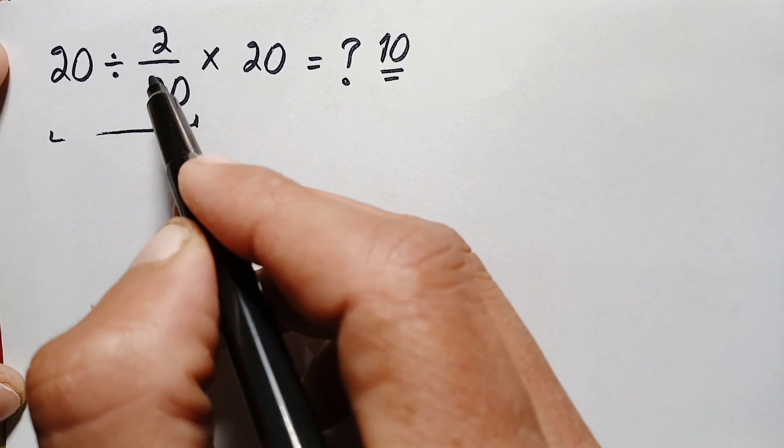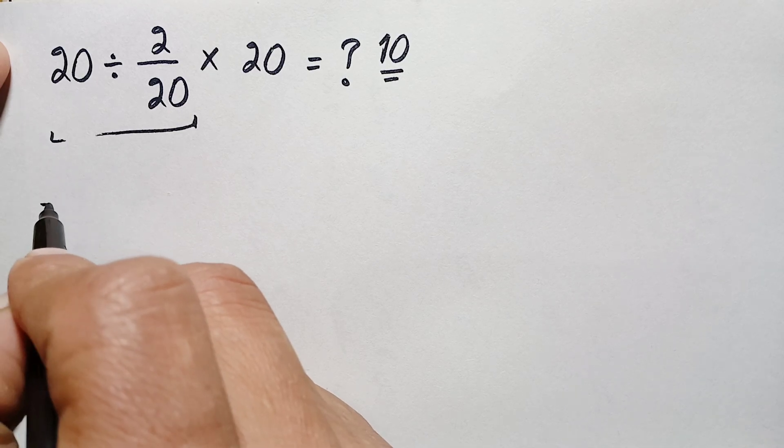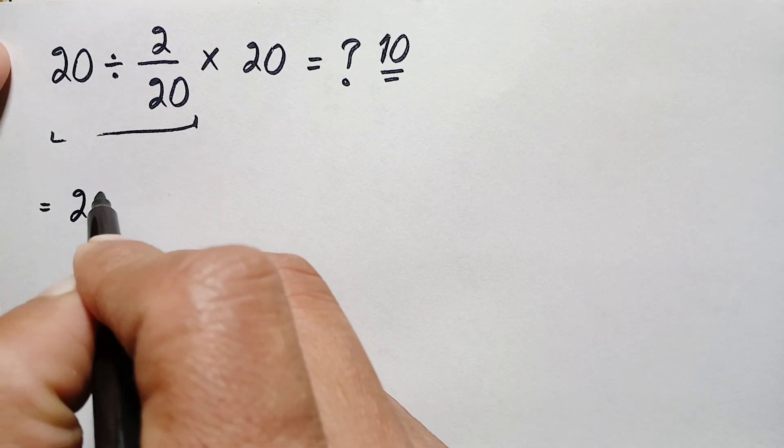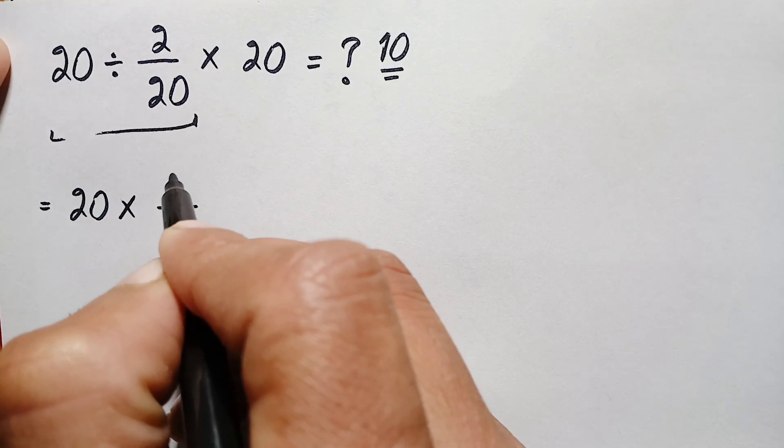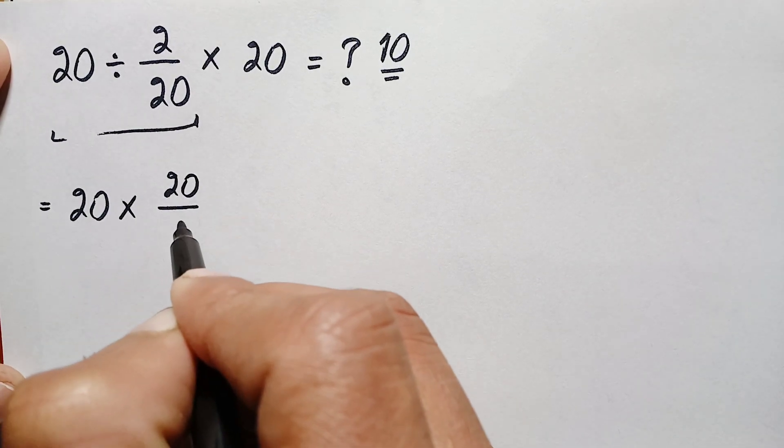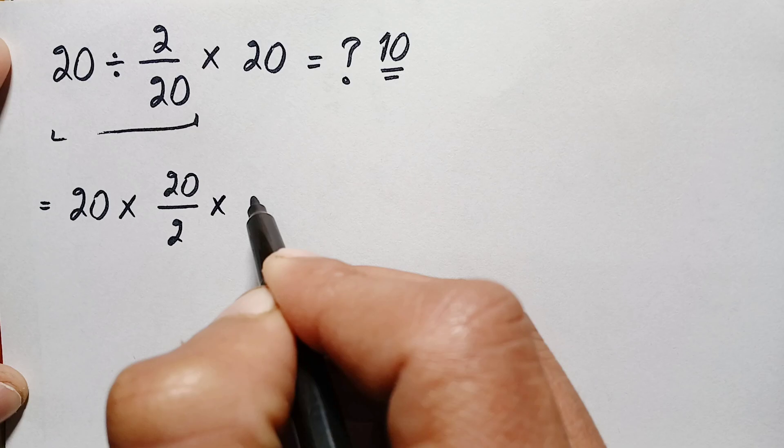We will reverse this one fraction. So this will become, this is 20, this division will become multiplication, and this will become reverse. So this will become 20 by 2 times this one 20.